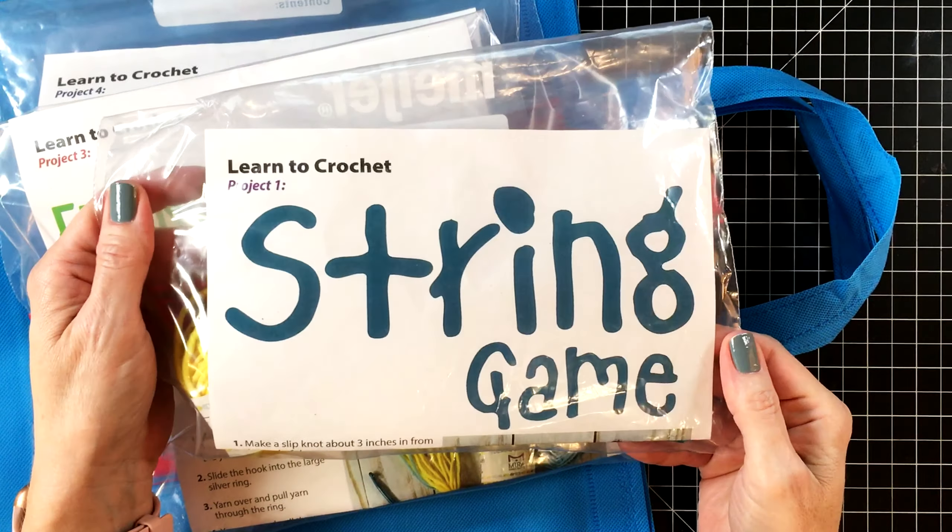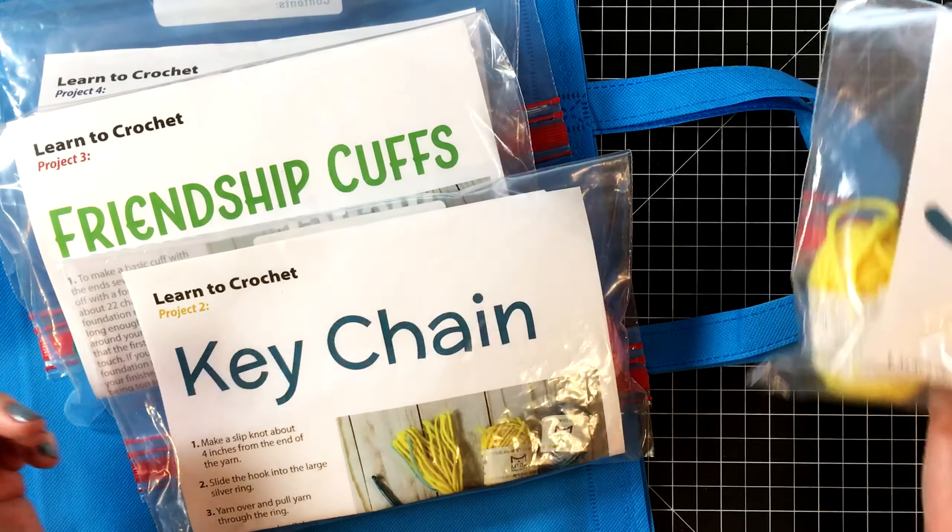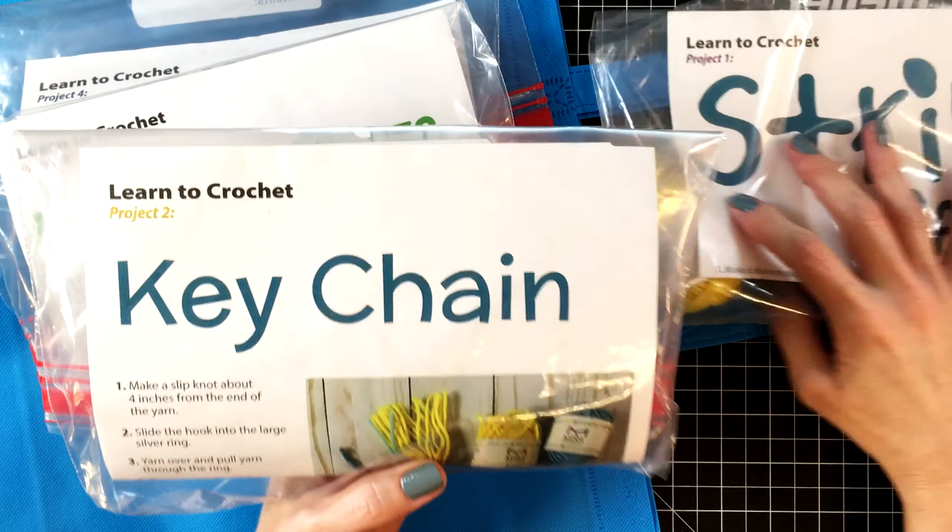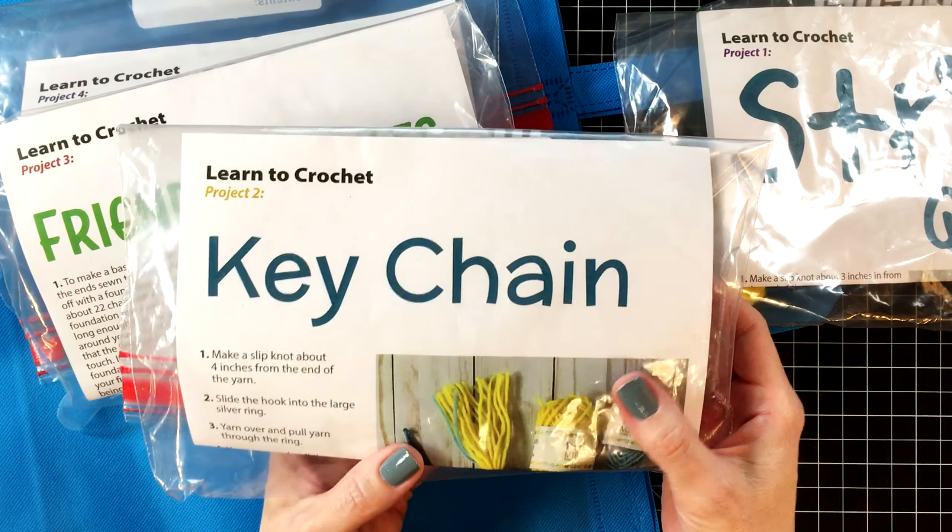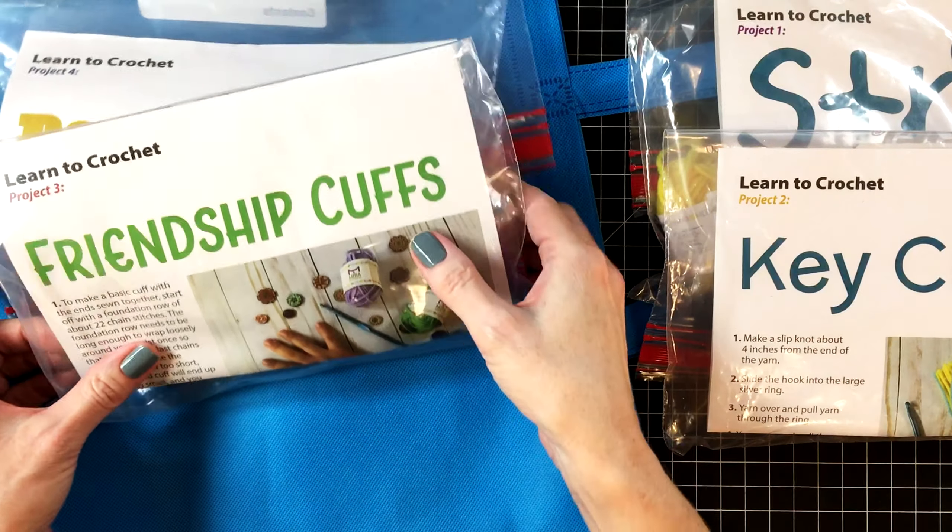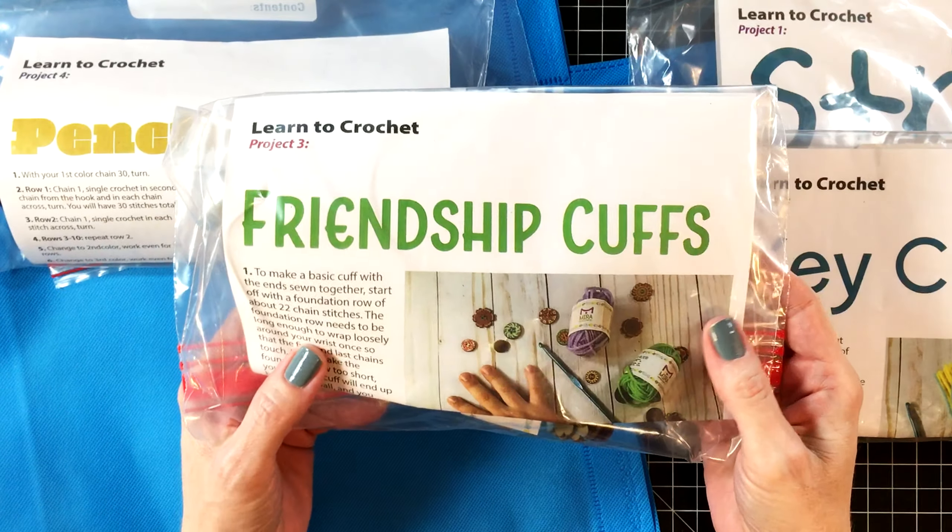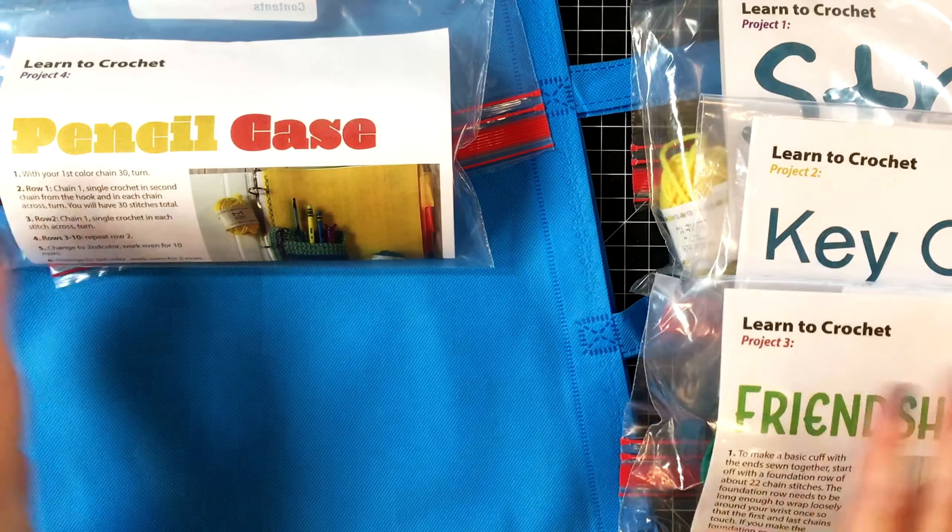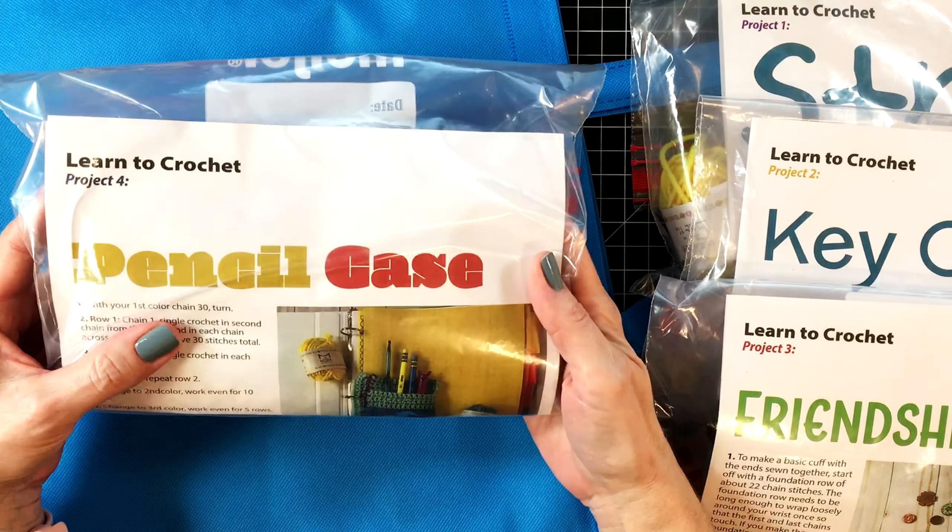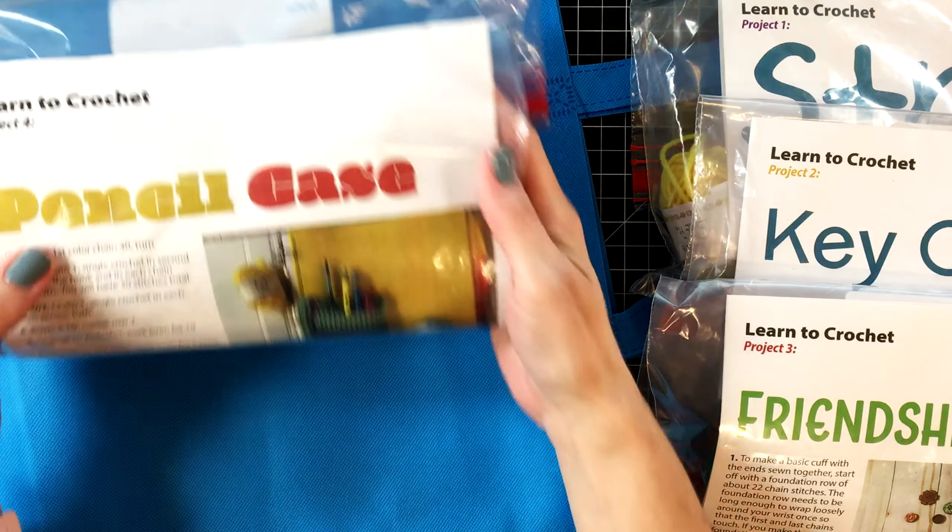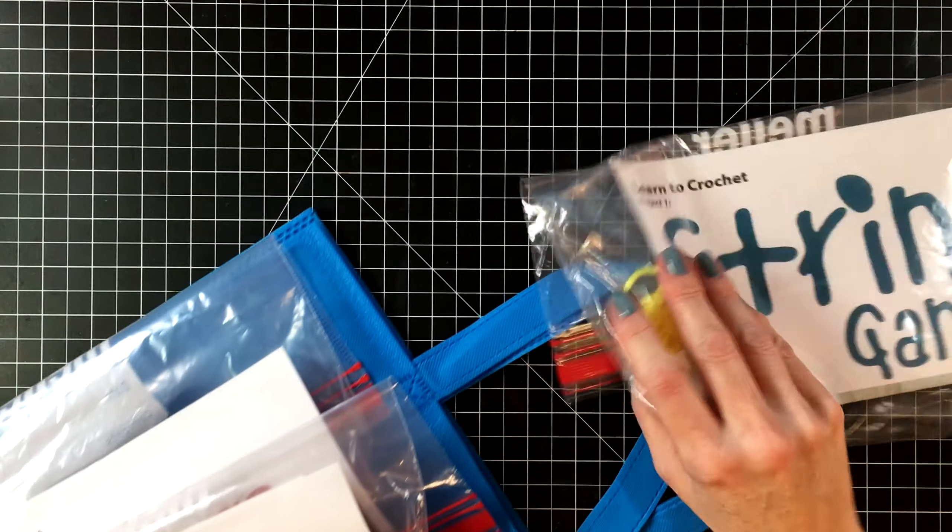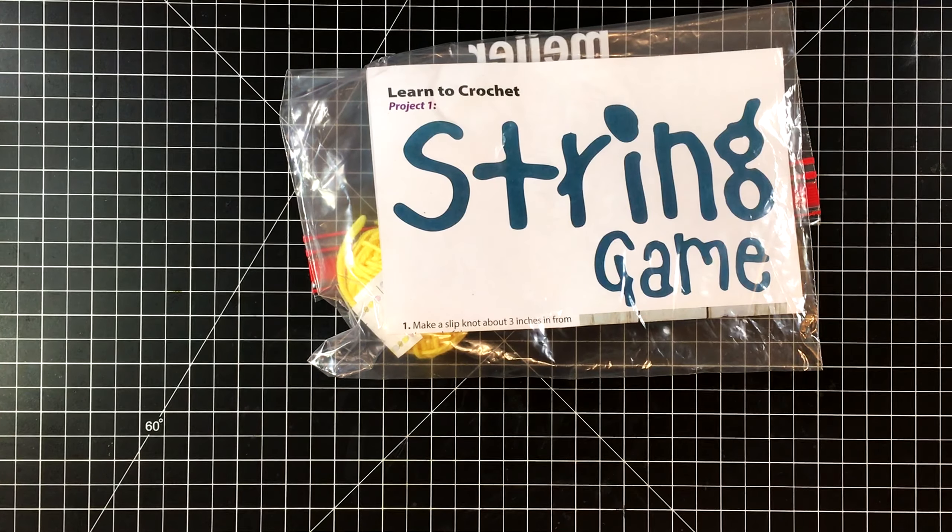I'm going to show you the four different lessons. The first one is the string game. In lesson number two, we're going to be creating a really fun keychain. Lesson number three is friendship cuffs. And for lesson number four, we're going to create a pencil case. These lessons get progressively harder as we go along, but they're all pretty simple for beginners.